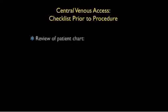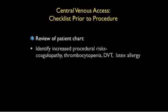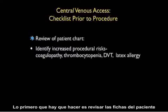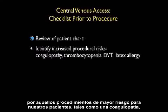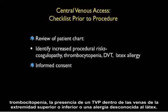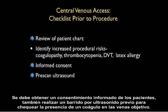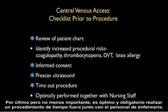Before performing central venous access, it is mandatory to perform a checklist prior to the procedure to decrease the complication rate. One should review the patient charts for increased procedural risks such as coagulopathy, thrombocytopenia, the presence of a DVT within the upper or lower extremity veins, or a known latex allergy. One should obtain informed consent, perform a pre-scan ultrasound to look for clot in the targeted veins, and perform a timeout procedure together with the nursing staff.